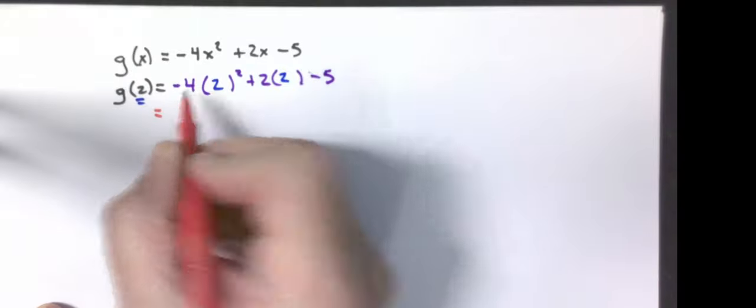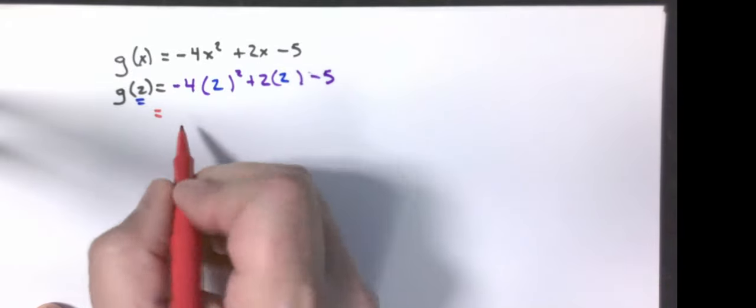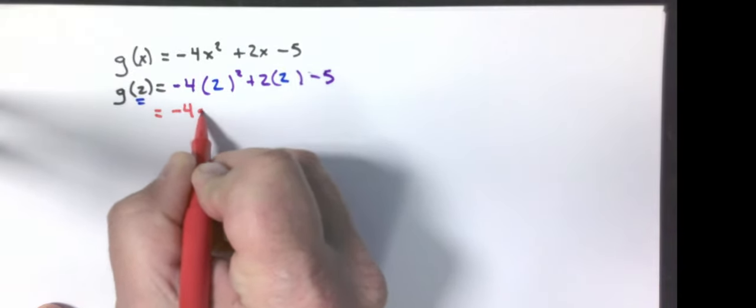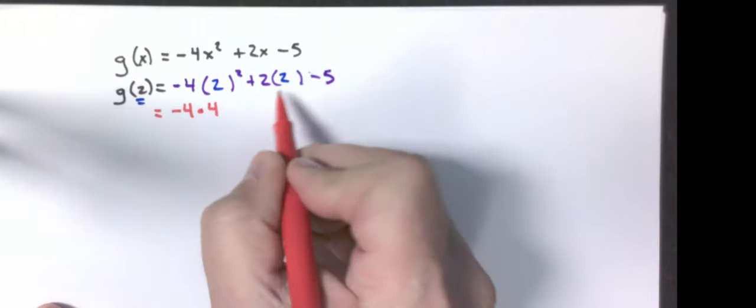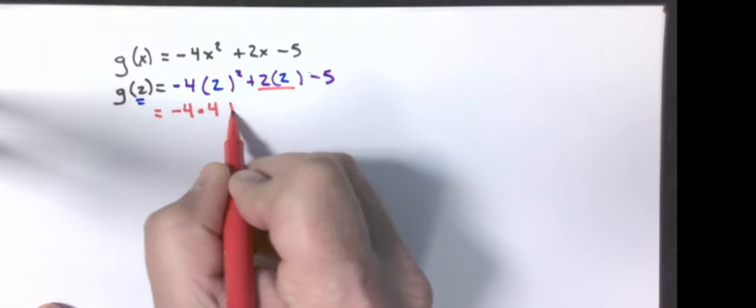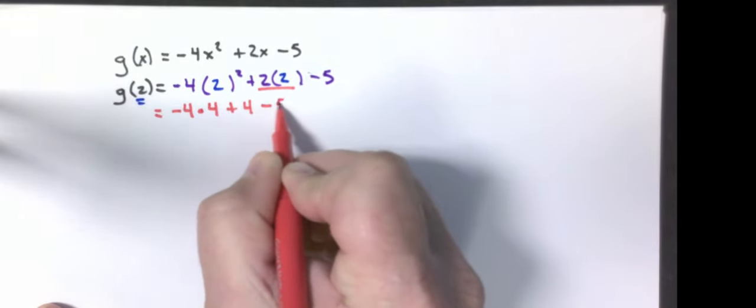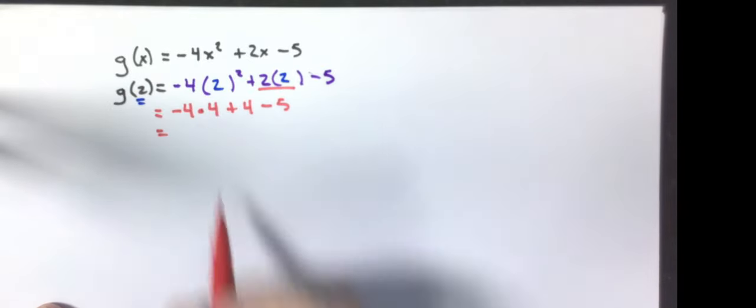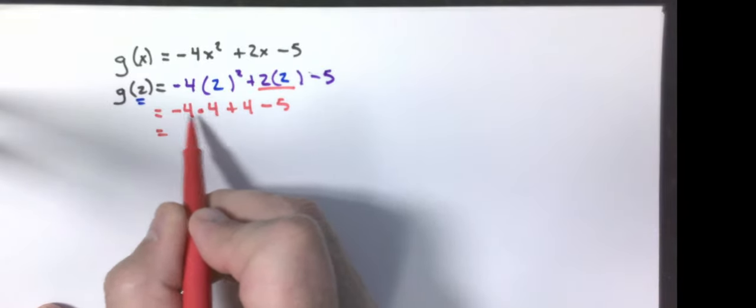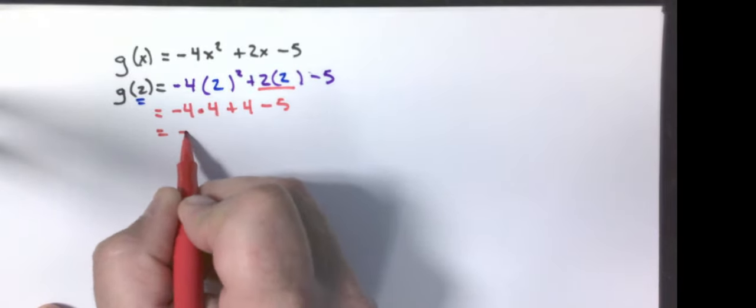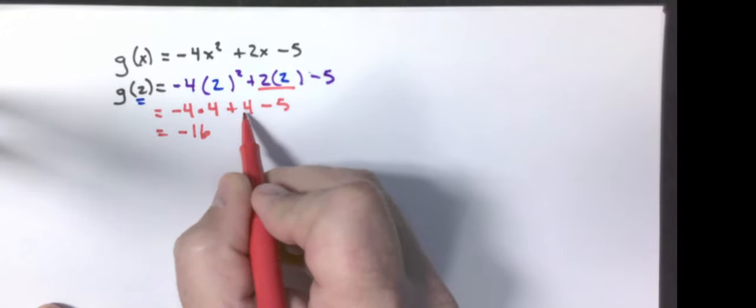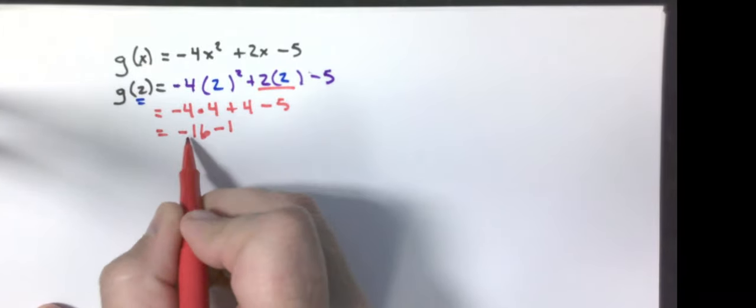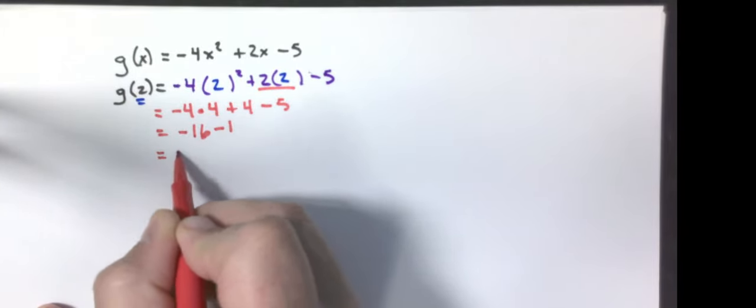Then I'm going to evaluate it following the order of operations. The negative 4, I'm not going to do anything here yet because I have 2 squared. I have negative 4 times 2 squared is 4. 2 times 2 is 4. Okay, multiplication happens next. Negative 4 times 4 is negative 16. 4 minus 5 is negative 1. Negative 16 minus 1 is negative 17.